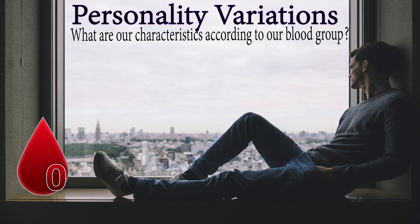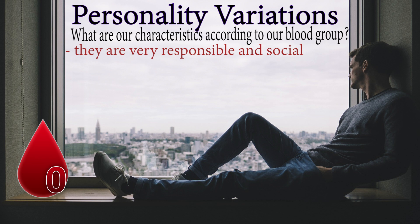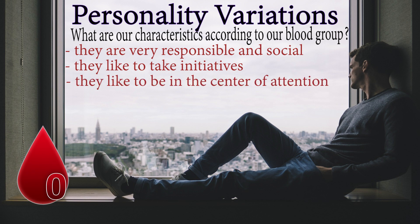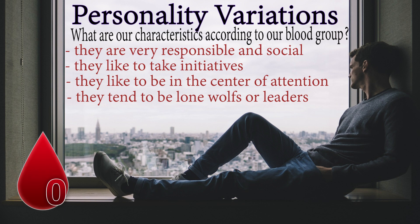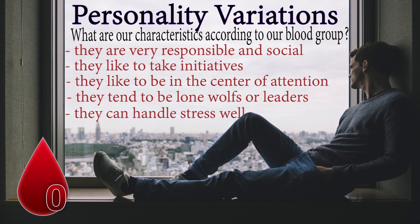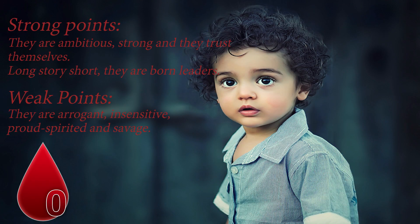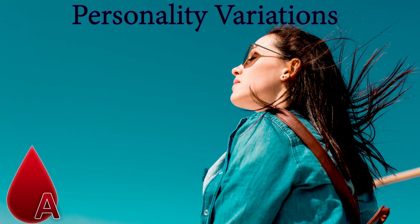Group O: Individuals with blood group O are very responsible and social. They like to take initiatives and tend to be lone wolves or leaders — usually focused, independent, and courageous. They handle stress well and have stronger immunity. Strong points: they are ambitious, strong, and self-trusting — born leaders. Weak points: they can be arrogant, insensitive, proud, and hot-headed.